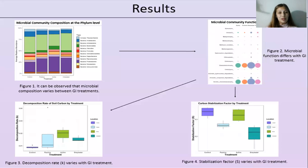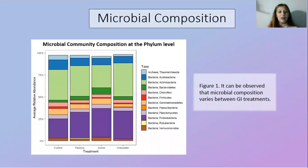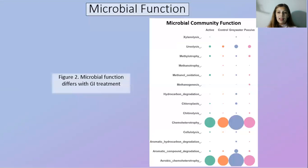These were our results. We can see that microbial community composition does differ between each of our treatments. Here we see that microbial community function also differs between the treatments, and several of these functions including methanogenesis and chemoheterotrophy are really important to the carbon cycle.